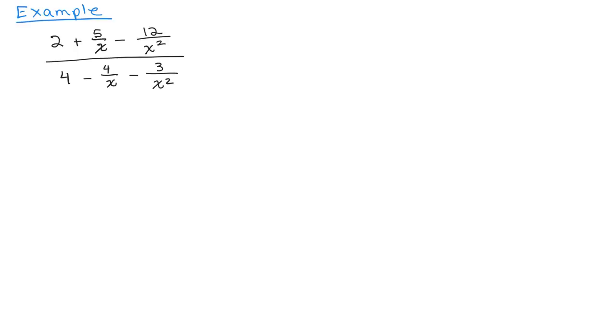Because there's more than a single term in the numerator and denominator, we need to multiply both the numerator and denominator by the least common multiple of all the denominators. So the denominators we see are x and x squared. Same ones in the denominator. So x squared is the least common denominator.